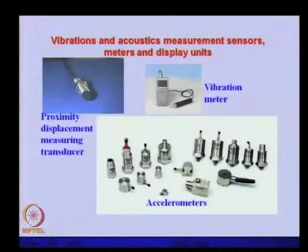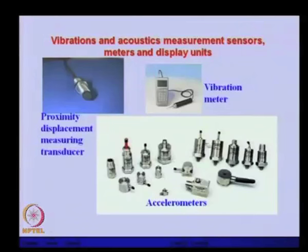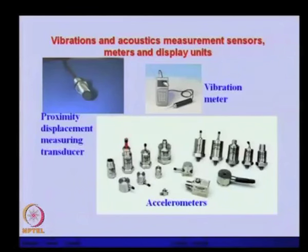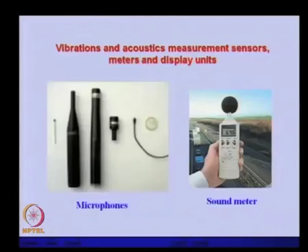To collect this data we have various kinds of sensors. One is the displacement-measuring proximity probe. There are also varieties of accelerometers — piezoelectric-based accelerometers — which give a voltage signal proportional to the acceleration of the body on which they are mounted. Various mounting options are available, such as base-threaded bolts or adhesive. A hand-held vibration meter can provide simple RMS values or vibration level information.